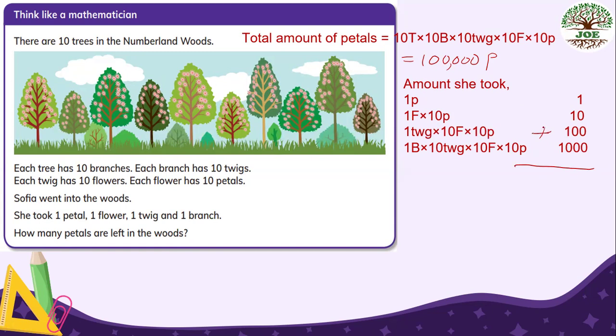So this is 10. One, one, one, one. 1,111 petals. This is amount she took from the woods.